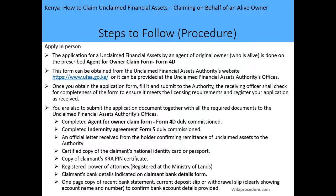This application can only be done in person. Before you even start, I urge you to first get a registered power of attorney at the Ministry of Lands so you can act as the agent on behalf of the original owner. The application for unclaimed financial assets by an agent of a living owner is done on prescribed Form 4D — the agent for owner claim form — which can be obtained from the UFAA website at www.ufaa.go.ke or from the Unclaimed Financial Assets Authority offices. Once you obtain the form, fill it and submit it at the authority, and the receiving officer shall check for completeness to ensure it meets all requirements and register your application.